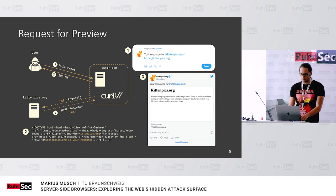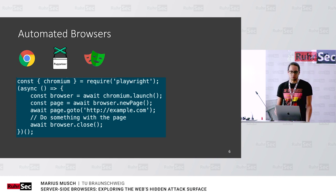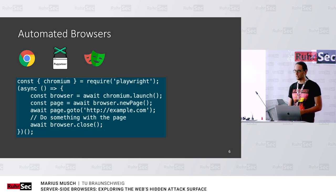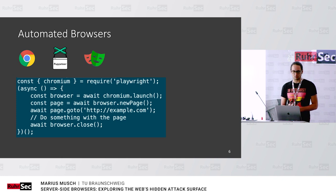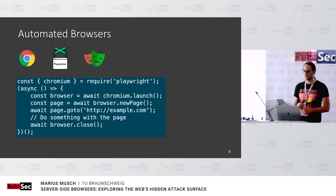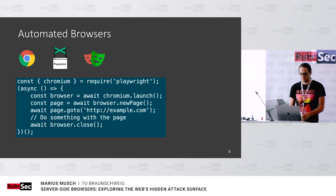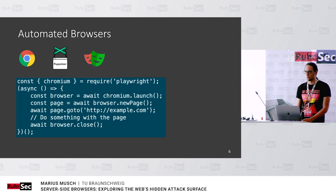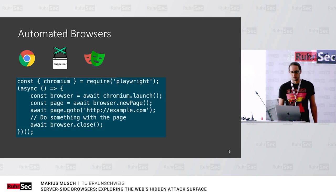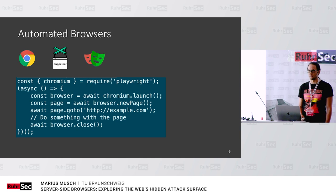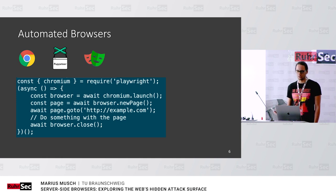What could we use for a nicer link preview? Well, there are automated browsers — maybe you've heard of them, like Headless Chrome, Puppeteer, Playwright. A while ago PhantomJS was also popular, though I think that's not the case anymore. With quite a few lines of code you can make an automated request. Here I've written it in Node.js, just from the documentation. We require a Playwright dependency, launch a Chromium browser, open a new tab, go to this website — which could be user-controlled in our link preview case — and then do something with the page, like take a screenshot, save it to a file, cache it, and show the preview.